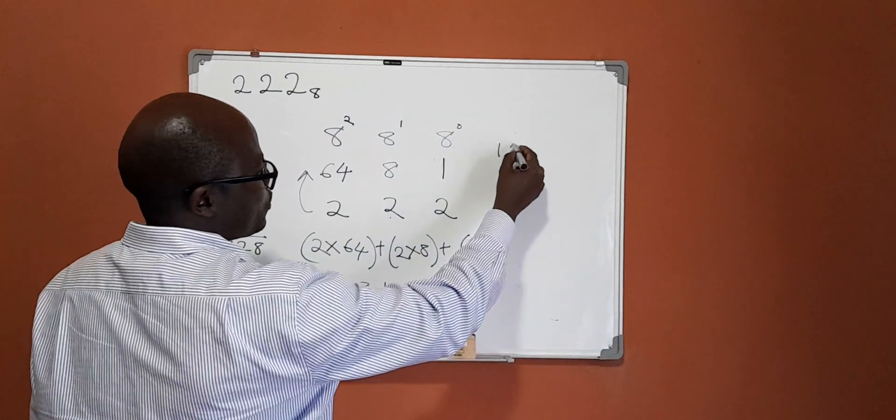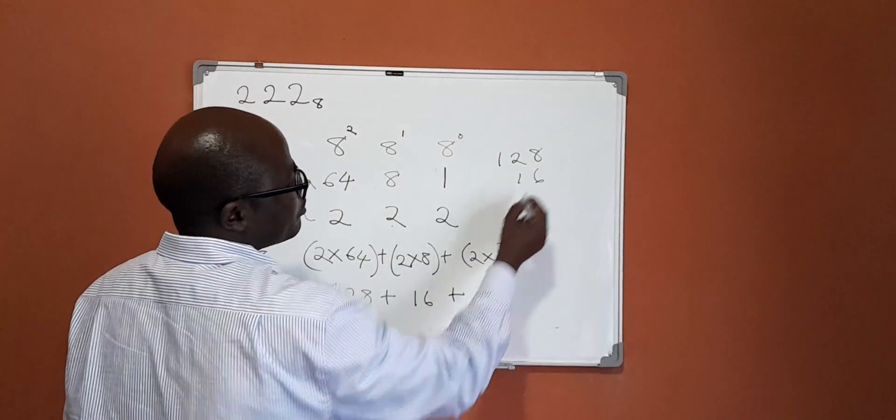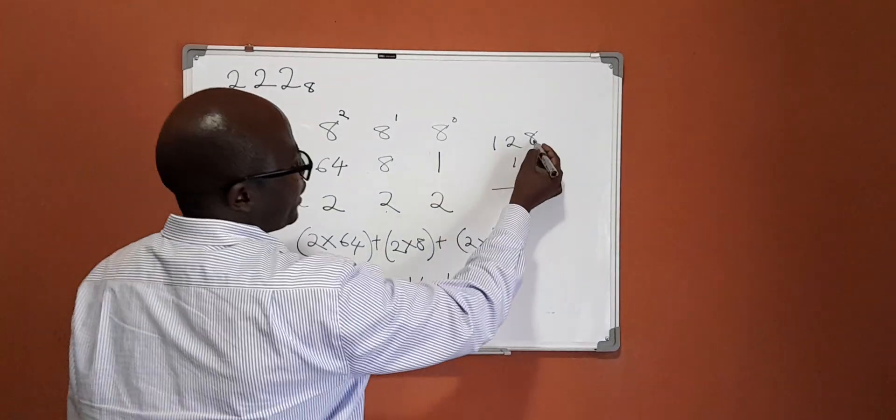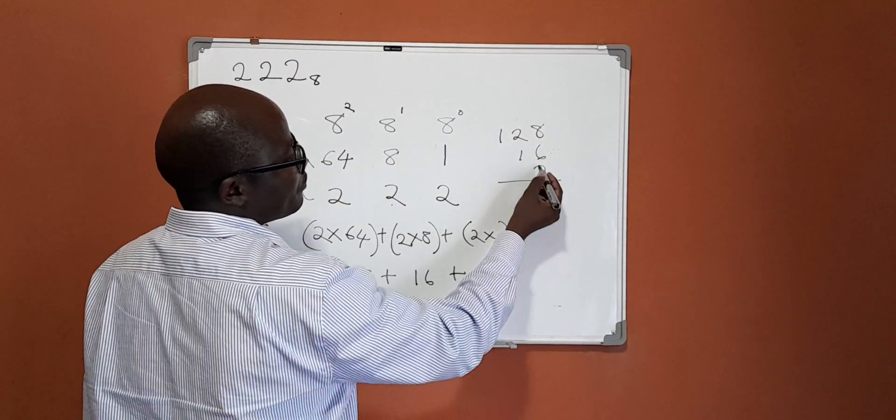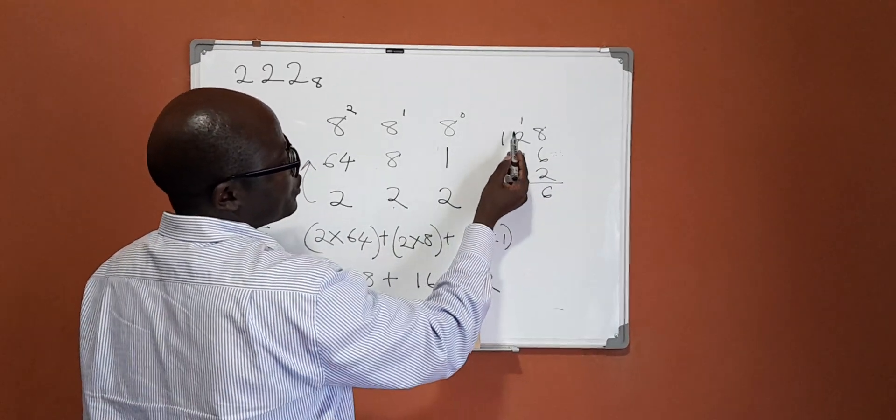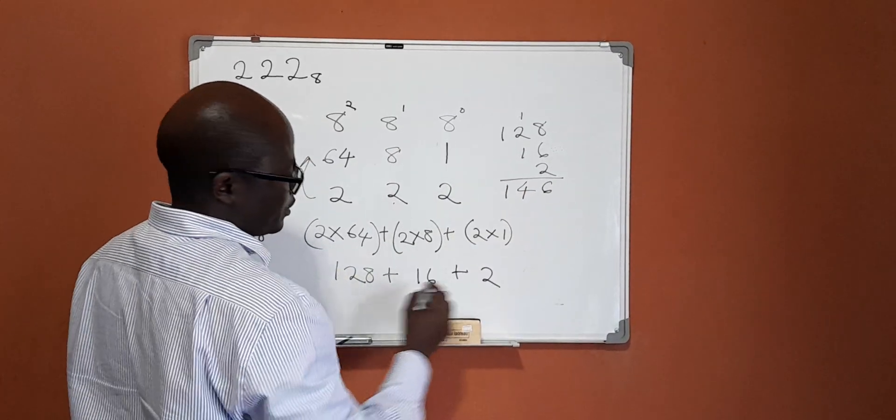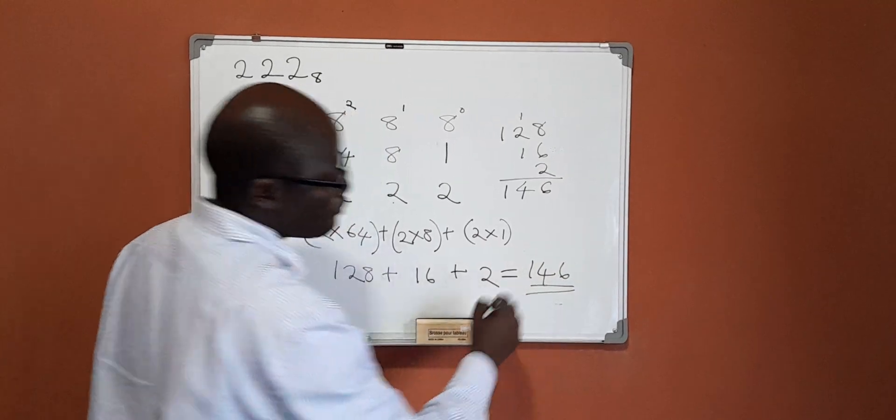So what we have is 128 plus 16 plus 2. So the total is 146.